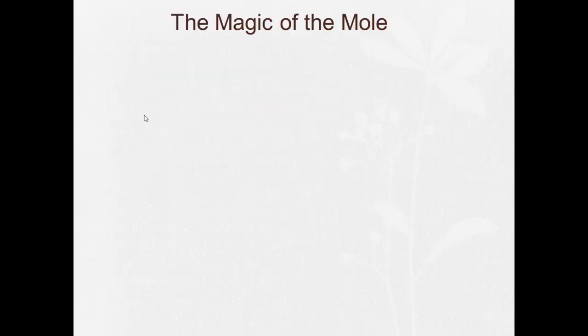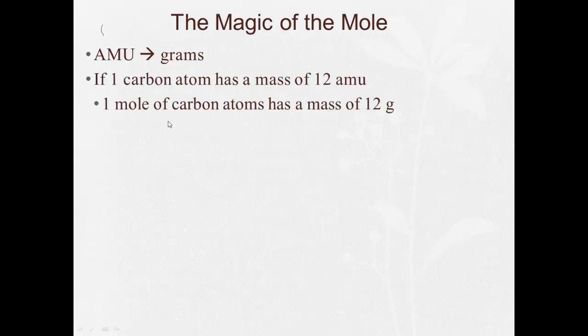It's actually kind of magical. And the magic of the mole is that it turns AMU, which we can't measure with any device that we have, into grams. Now, if one carbon atom has a mass of 12 AMU, then one mole of carbon atoms has a mass of 12 grams. It's very simple. It takes whatever the atomic mass is on the periodic table and changes it from AMU to grams.